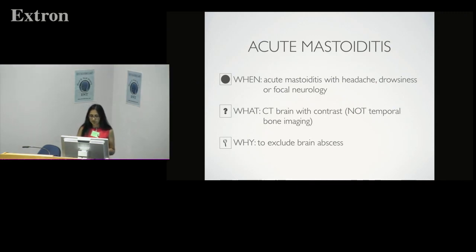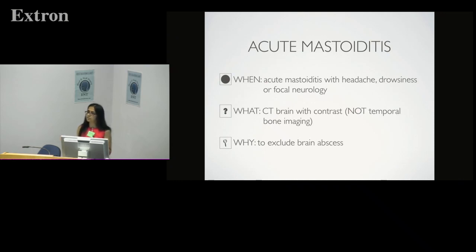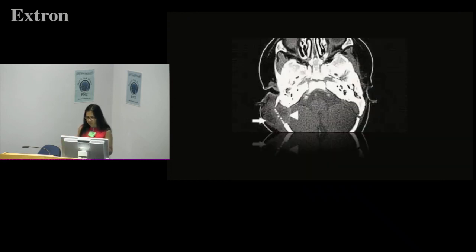Moving from foreign bodies to infections: when you have a patient with acute mastoiditis who presents with headache, drowsiness, or focal neurology, you need to exclude intracranial complications. You know how to treat mastoiditis itself, but the question is: has it breached the tegmen tympani, gone into the brain, is there a brain abscess developing, do we need to get the neurosurgeons involved? What you need is a CT brain with contrast to see the brain tissue. Here is a posterior fossa abscess from mastoiditis, and a basal abscess as well.